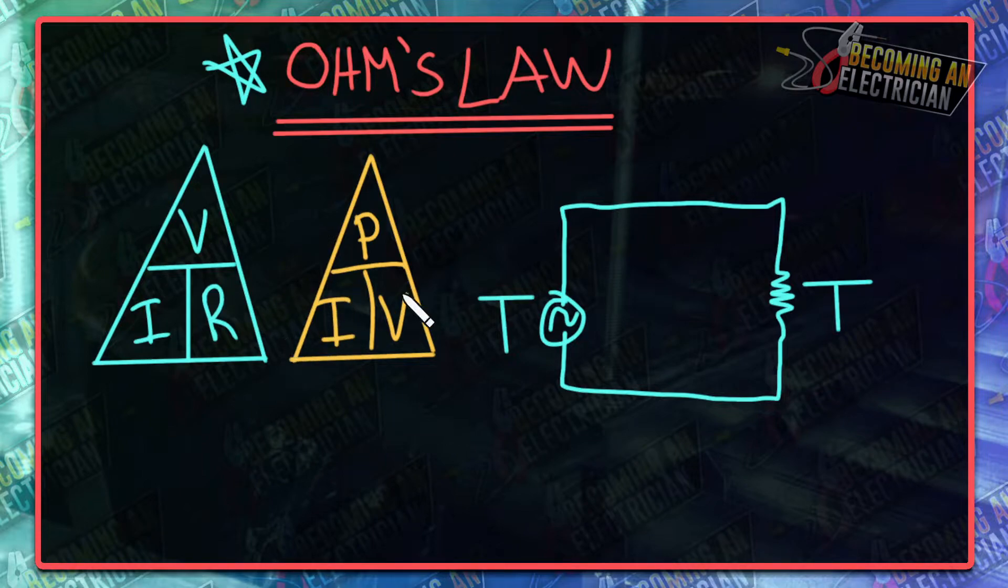V is voltage, R is resistance, P is power, so watts. If we want to figure out power, you multiply current times voltage and it gives you power. We'll do a little example here in just a second.